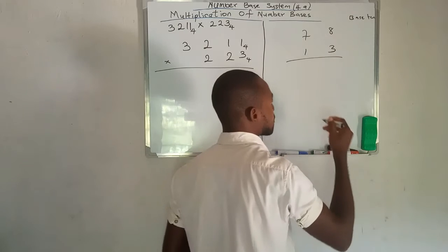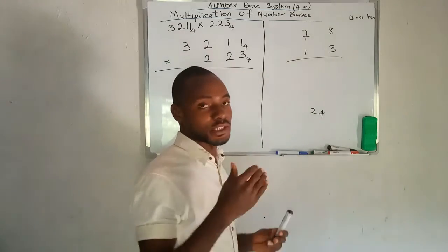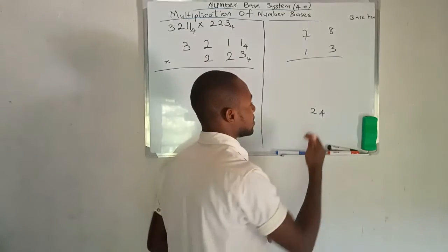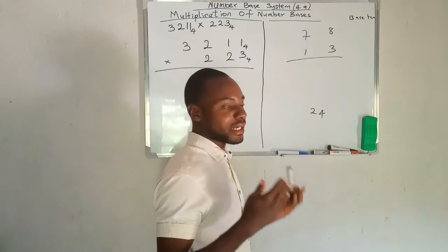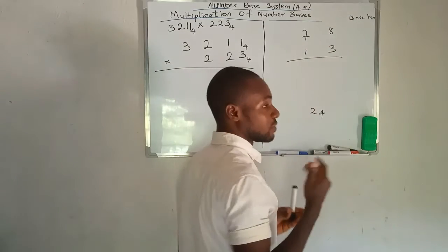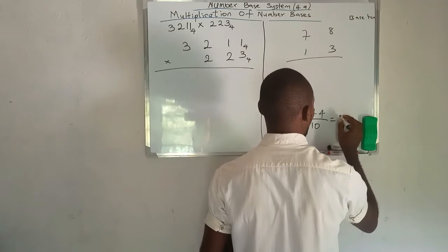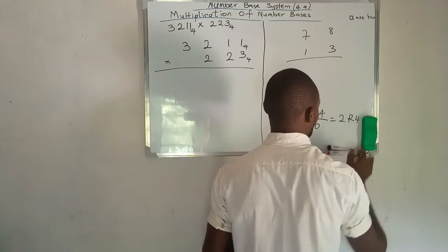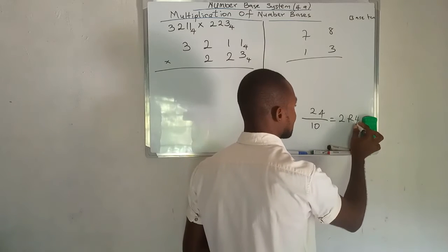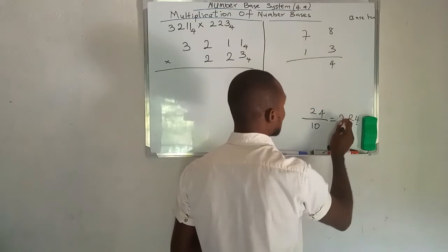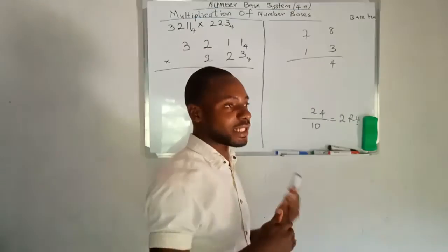So we have 3 times 8 is 24. Numbers in base 10 go from 0 to 9, and 24 is bigger than any single digit in base 10. So we cannot just write it down. What we do is divide it by 10 because we are working in base 10. So 24 divided by 10 gives us 2 remainder 4. We write down the remainder 4 in that place and take 2 to the next number. That's basically what we do when multiplying numbers both in base 10 and in other bases.